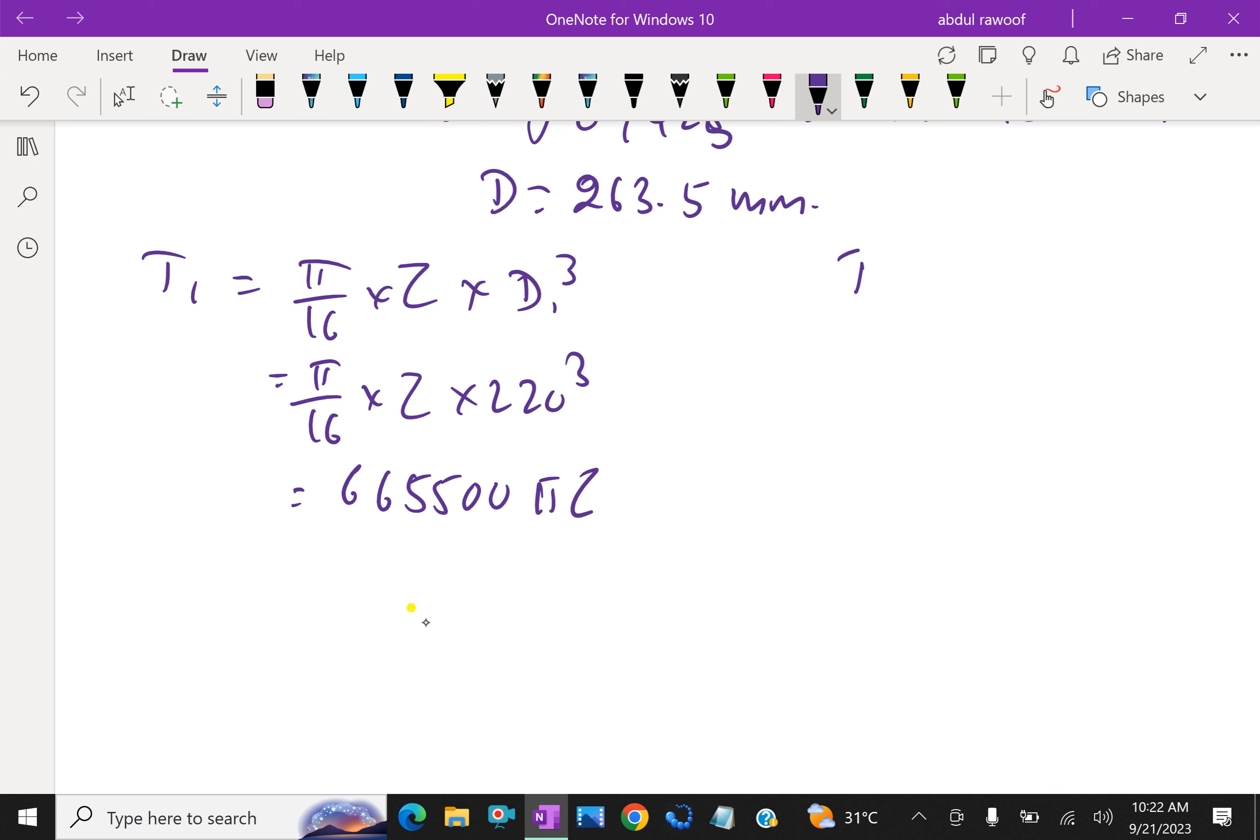For hollow shaft, T2 equals π/16 τ (D⁴ - d⁴)/D. So T2 = π/16 τ (263.5⁴ - 220⁴)/263.5, which gives π × 587,827 × 10³ π τ.